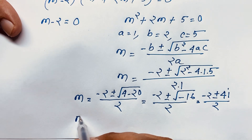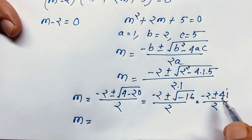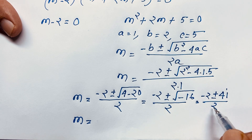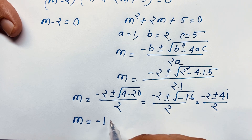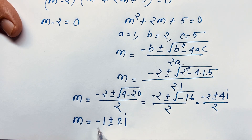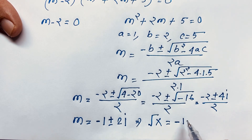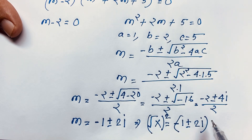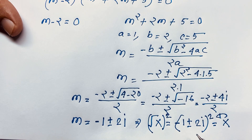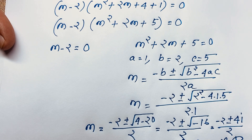Separating the fraction: negative 2 divided by 2 is negative 1, and plus or minus 4i divided by 2 is plus or minus 2i. So m equals negative 1 plus or minus 2i. Therefore square root x equals negative 1 plus or minus 2i. This is a complex solution — no real solution — so we reject it. We need a real solution.